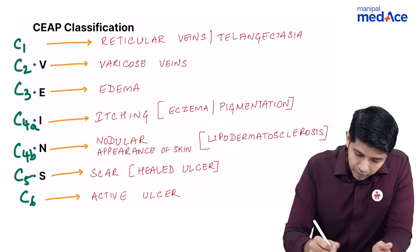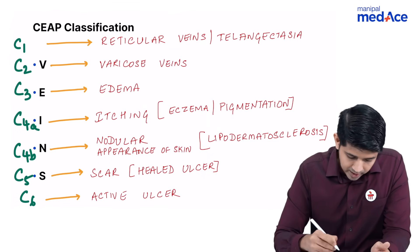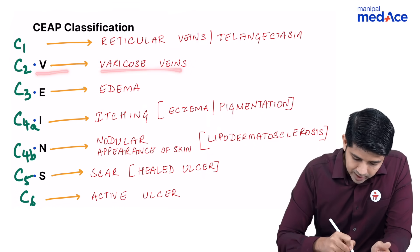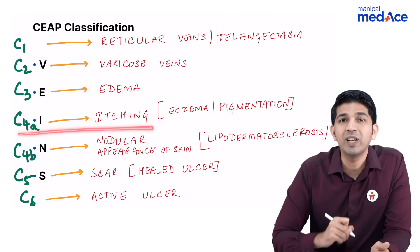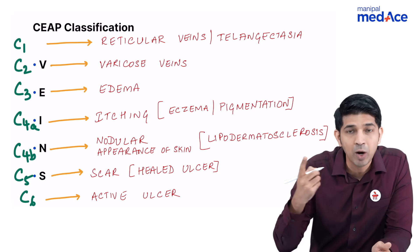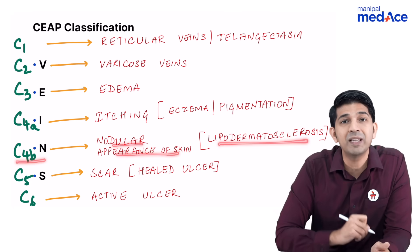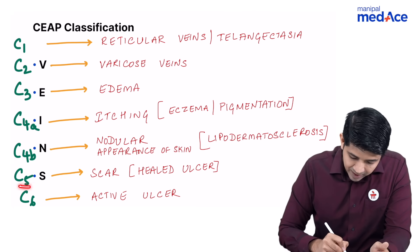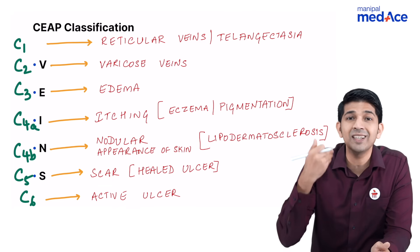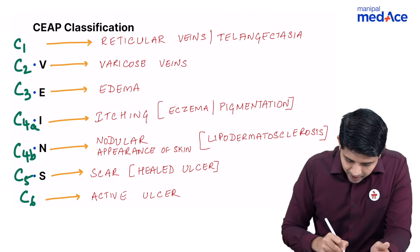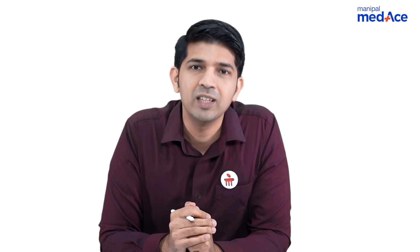Now, if you look at the expansion of each of them: C1 is reticular veins or telangiectasia; V for varicose veins, that is C2; C3 E for edema; C4A I for itching, meaning the patient can either have eczema or pigmentation; C4B is nodular appearance of the skin, that means lipodermatosclerosis; C5 S is scarring, meaning it's an ulcer which is already healed; and C6 is an active ulcer. Thank you.